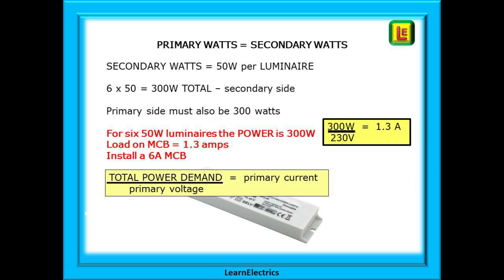If the secondary side is 300 watts, then so too is the primary side, 300 watts. Divide 300 by the nominal voltage of 230 volts, and we have a current demand of just 1.3 amps on the primary side. 25 amps output only needs 1.3 amps input. So our normal 6 amp MCB can easily cope with this demand.